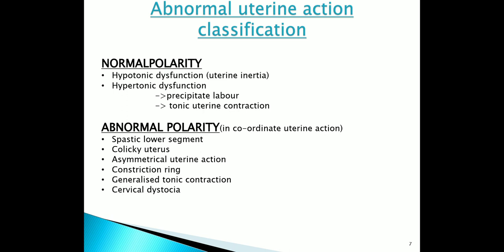The following are different varieties of abnormal uterine contraction. First, abnormal uterine action with normal polarity, which includes hypotonic dysfunction, as well as precipitate labor and tonic uterine contraction. Second, abnormal polarity, also called incoordinated uterine action, which includes spastic lower segment, colicky uterus, asymmetrical uterine action, constriction ring, generalized tonic contraction, and cervical dystocia.